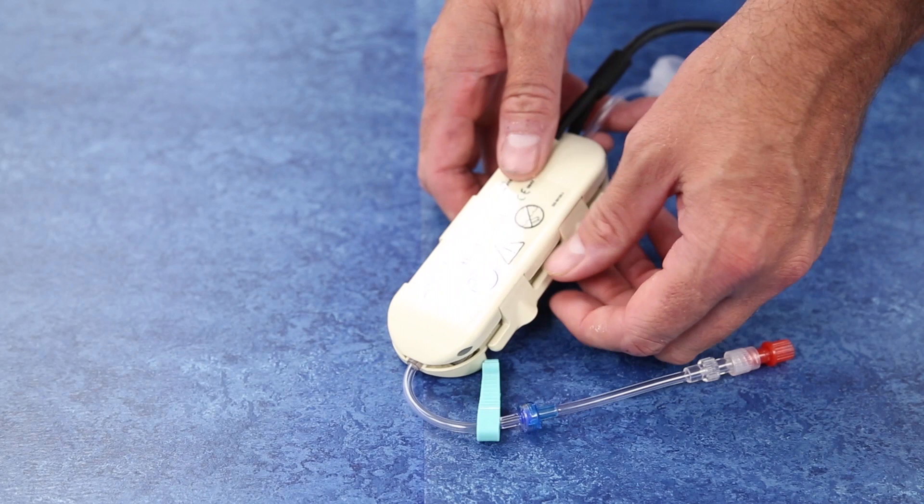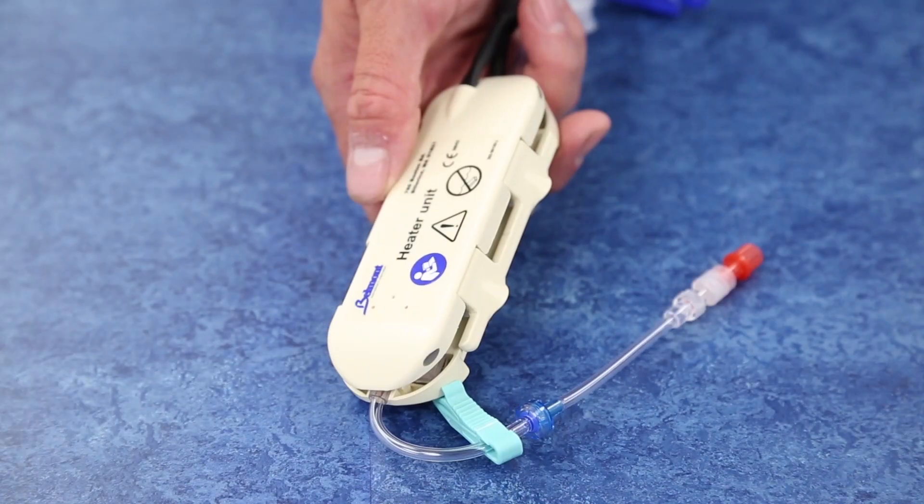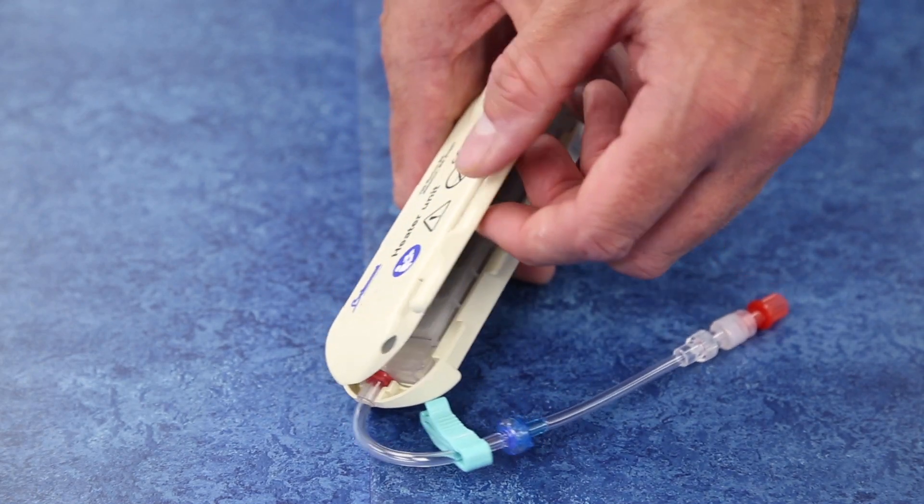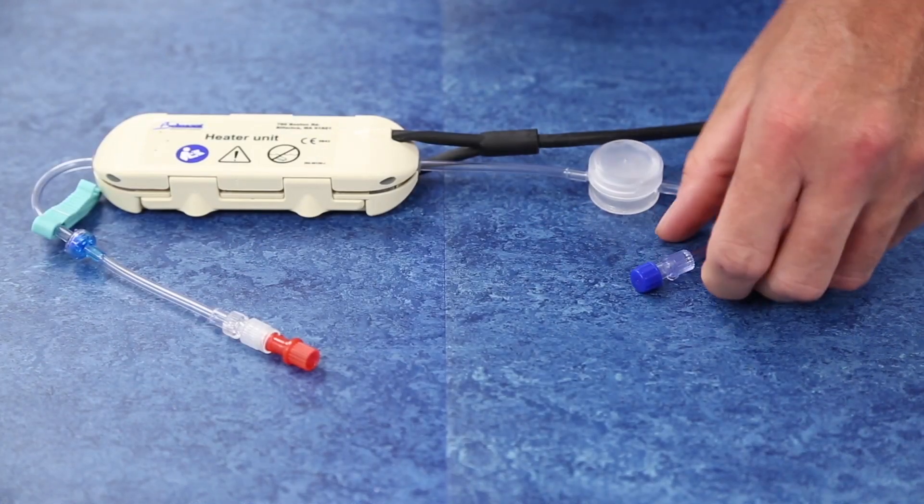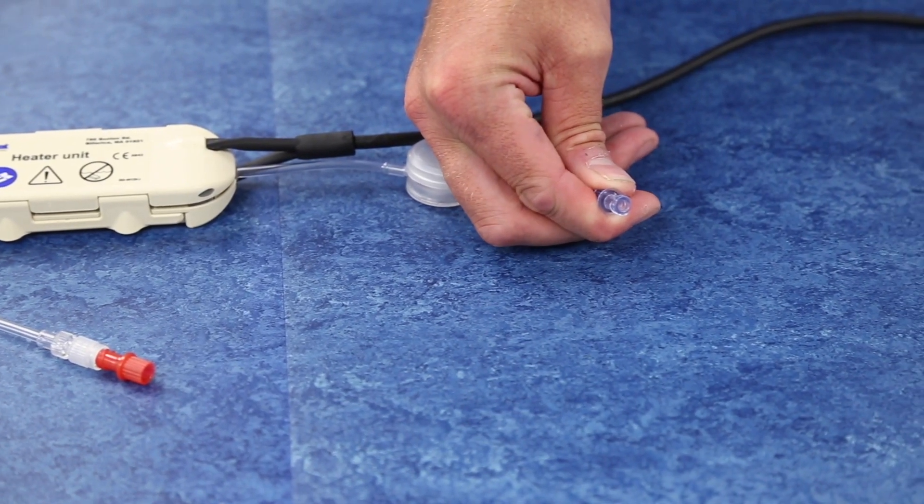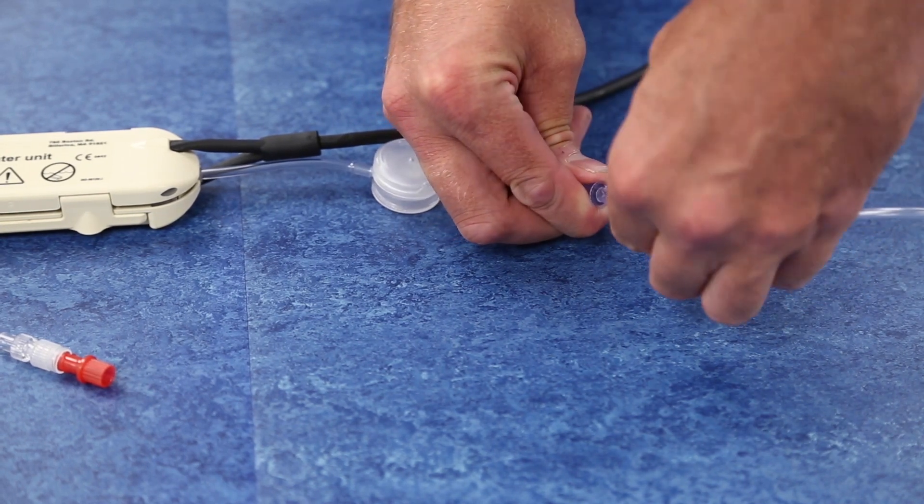Close and latch the heater door. Do not force the door closed. If the disposable is incorrectly positioned, the heater unit will not close properly. As a last step before moving to priming, disconnect the blue lure cap from the buddy disposable and then connect any administration set to that lure fitting.